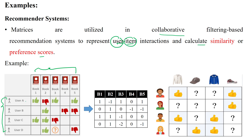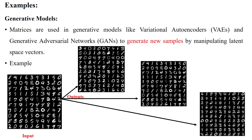For example, user A likes book 1, dislikes book 2, likes book 3, nothing is given for book 4, and likes book 5. This can be represented using a matrix where like means 1, dislike means minus one, and if nothing is available that will be zero (neutral). We can use the matrix to represent recommending systems for users and products.